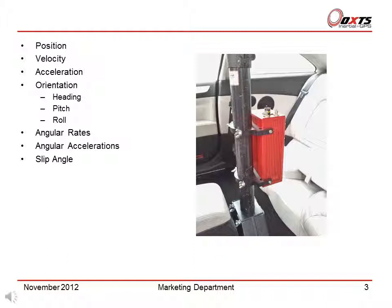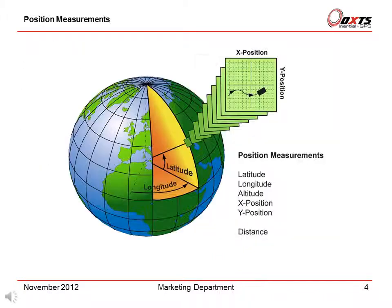The core measurements are made by the RT; other values can be computed from the fundamental measurements. Now we should look at position measurements. The position measurements include latitude, longitude, altitude, the x and y position, and also the distance.